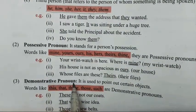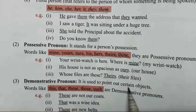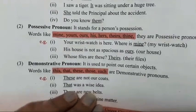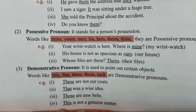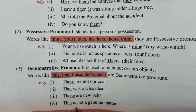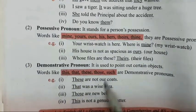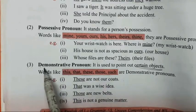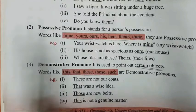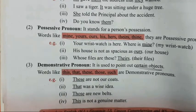The third one is demonstrative pronoun — it is used to point out certain objects. Objects ke baare mein hum in words se define karte hai: this, that, these, those, such. Examples: 'These are not our coats.' 'That was a wise idea.' 'Those are new belts.' 'This is not a genuine matter.' Aapko exam mein identify the pronoun ya fill in the blanks mein underline karne ke liye aa sakta hai.